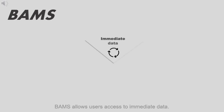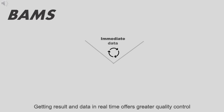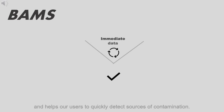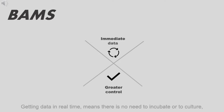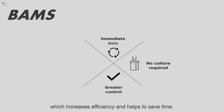BAMS allows users access to immediate data. Getting results in real-time offers greater quality control and helps users to quickly detect sources of contamination. Getting data in real-time means there is no need to incubate or to culture, which increases efficiency and saves time.